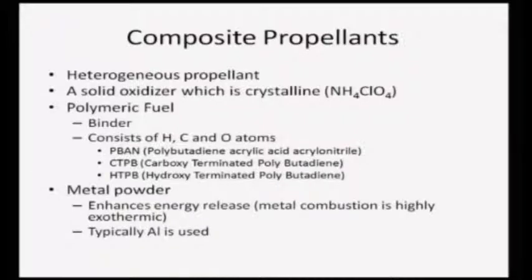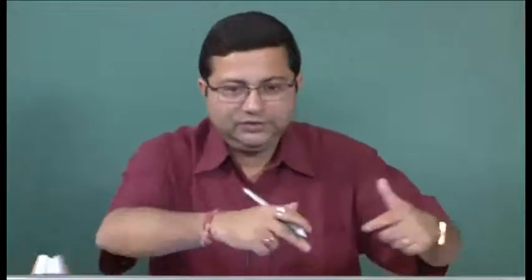We also embed some metal powders into this propellant mixture. Typically aluminum is used as the metal powder - aluminum particles are mixed along with this composite, giving more heterogeneity - a grainy structure. The advantage of this metal powder is that when the metal burns it burns in a highly exothermic manner, so the energy density increases and energy release is enhanced. Therefore, these composites will have higher energy density compared to double base propellants.